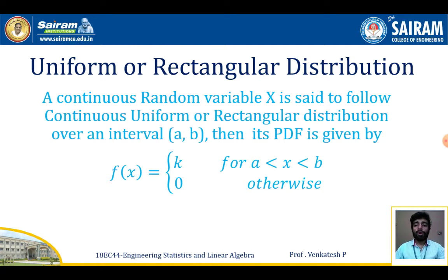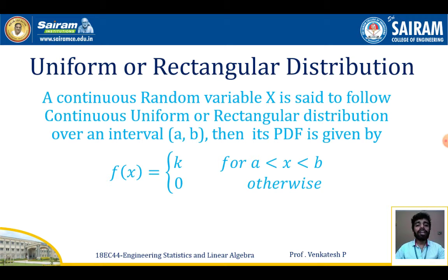A continuous random variable x is said to follow a continuous uniform or rectangular distribution over an interval (a, b). Its probability density function is given by f(x) = k for a < x < b, and 0 otherwise.